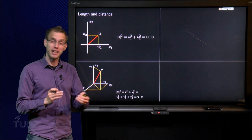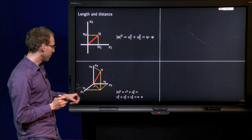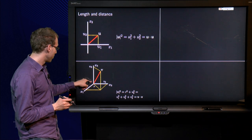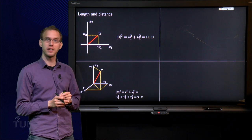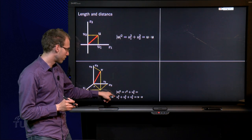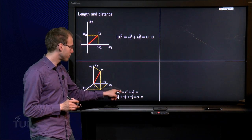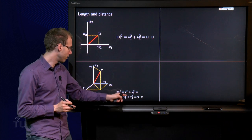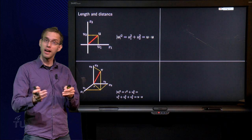And then we can express r in terms of v1 and v2. So over here, also Pythagoras, v1 squared plus v2 squared equals r squared. So we have r squared equals v1 squared plus v2 squared, so the length of v squared equals v1 squared plus v2 squared plus v3 squared, which equals the inner product v·v.